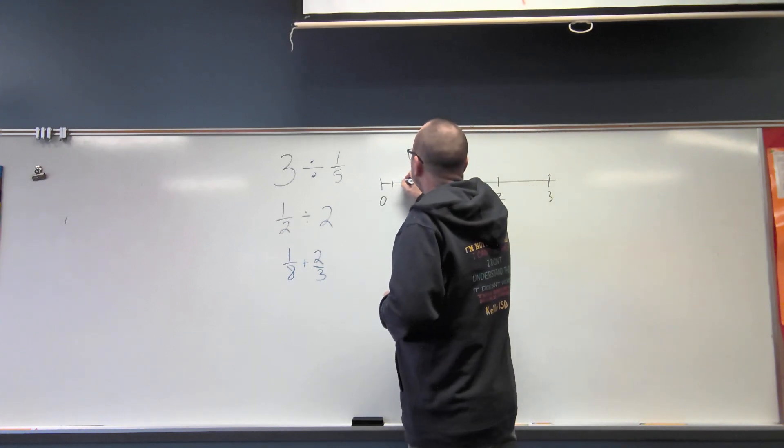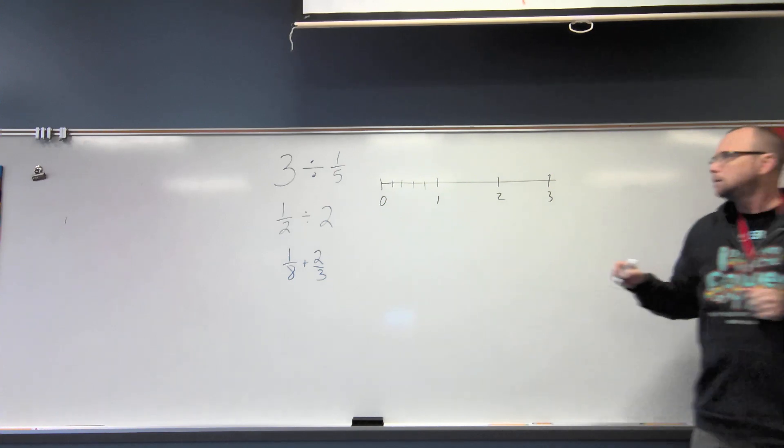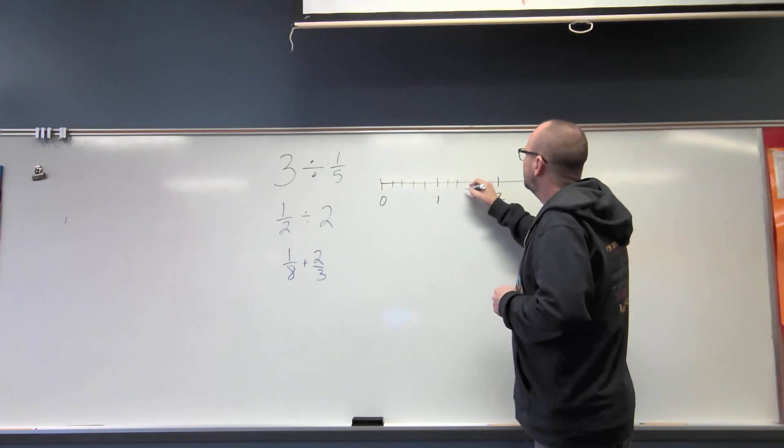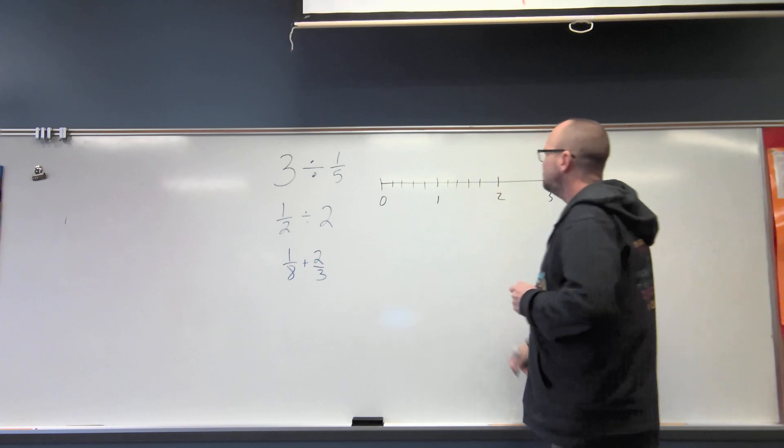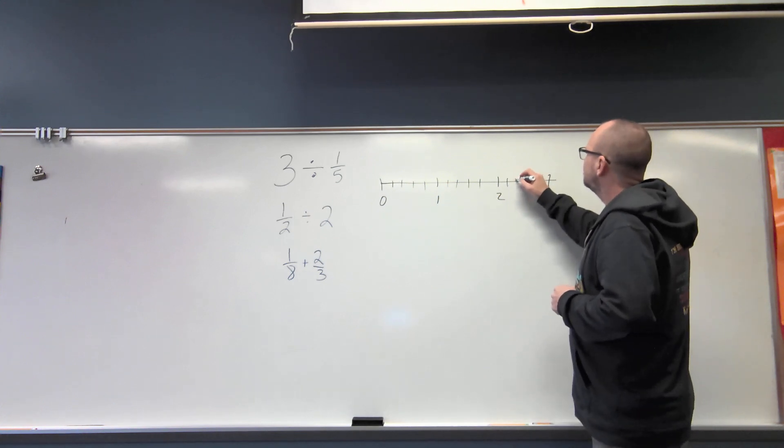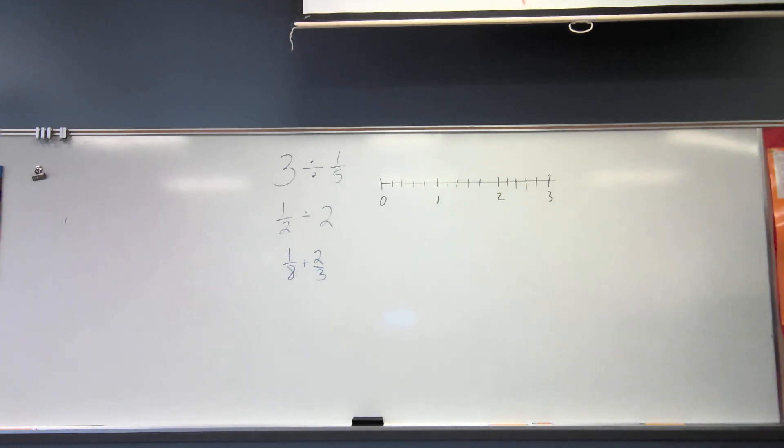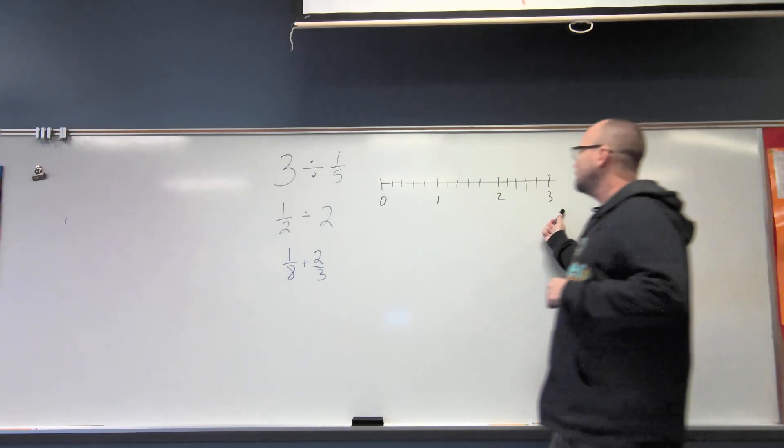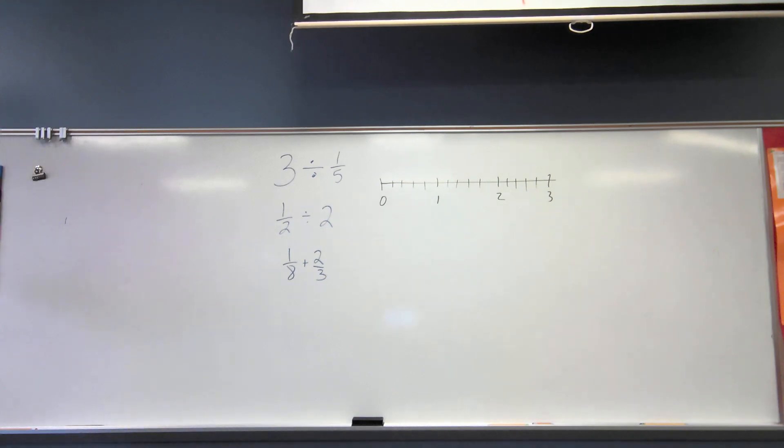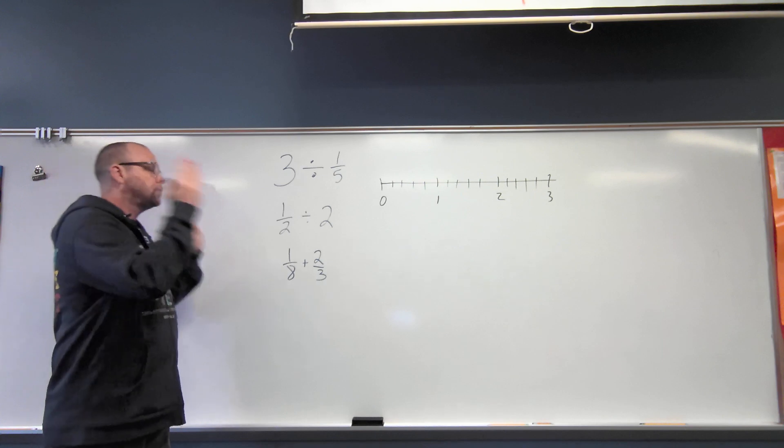So I got 1 fifth, 2 fifths, 3 fifths, 4 fifths, 5 fifths would equal 1. 1 and 1 fifth, 1 and 2 fifths, 1 and 3 fifths, 1 and 4 fifths, 1 and 5 fifths would equal 2. 2 and 1 fifth, 2 and 2 fifths, 2 and 3 fifths, 2 and 4 fifths, 2 and 5 fifths would equal 3. So now I want to take my 3 wholes and I want to divide it into how many fifths fit into this 3 wholes.